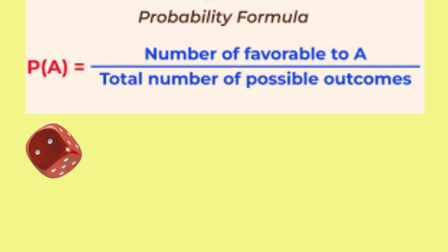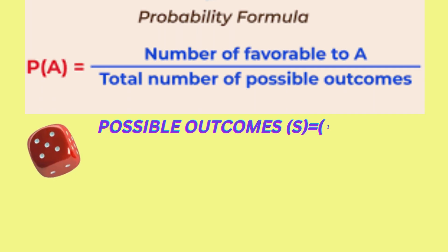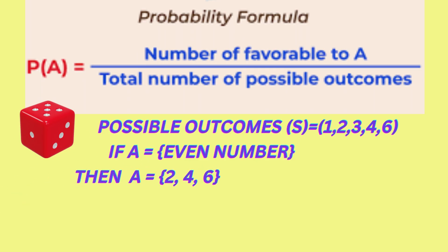For example, if you throw a die to the ground, the possible outcomes or the sample space would be the numbers 1 to 6. If we define A as the event that the score is an even number, then the set A would be the numbers 2, 4, and 6.